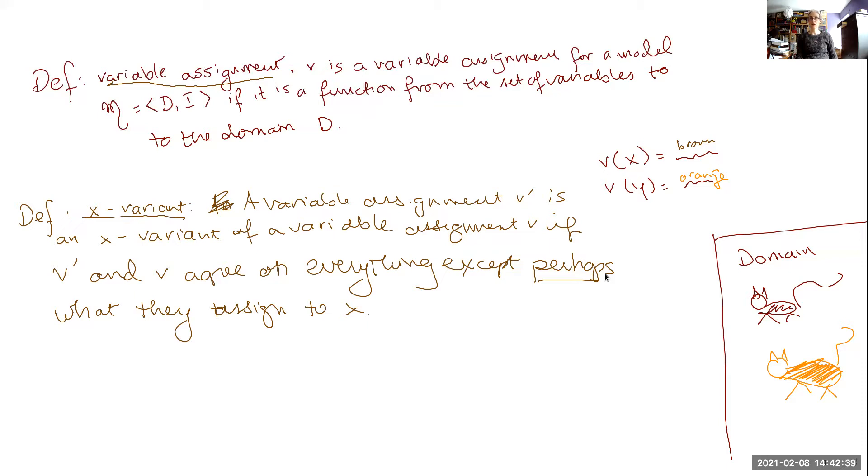So here we've got our variable assignments, v, that sends x to the brown cat, and v to the, sorry, x to the brown cat, and y to the orange cat.